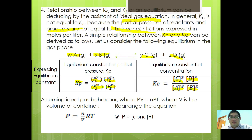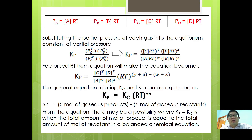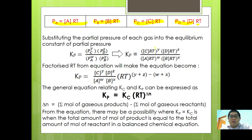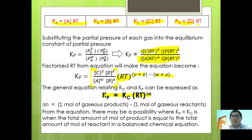Assuming ideal gas behavior where PV = nRT, rearranging gives P = (n/V)RT, where n/V is concentration, so partial pressure equals concentration times RT. Substituting for each species — P_A = [A]RT, P_B = [B]RT, P_C = [C]RT, P_D = [D]RT — and substituting into Kp, we pull out the concentration terms to get Kp = Kc · (RT)^(y+z−w−x).